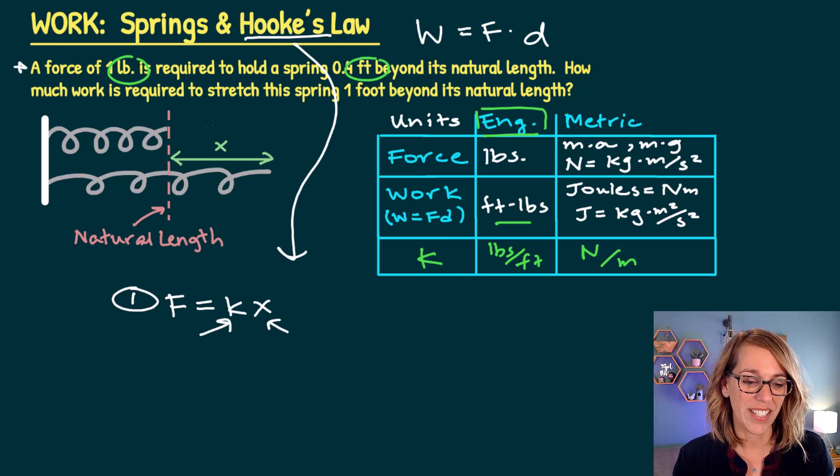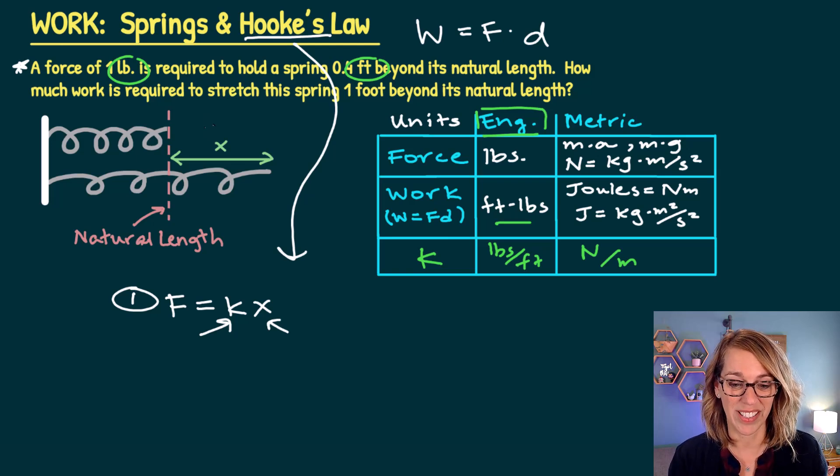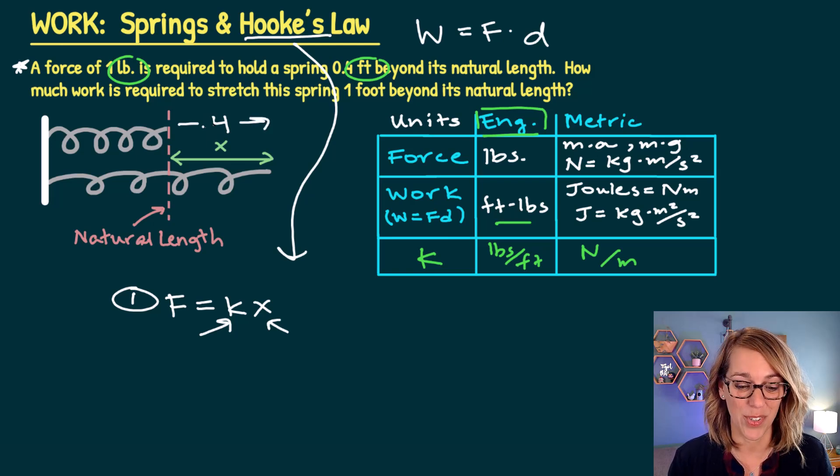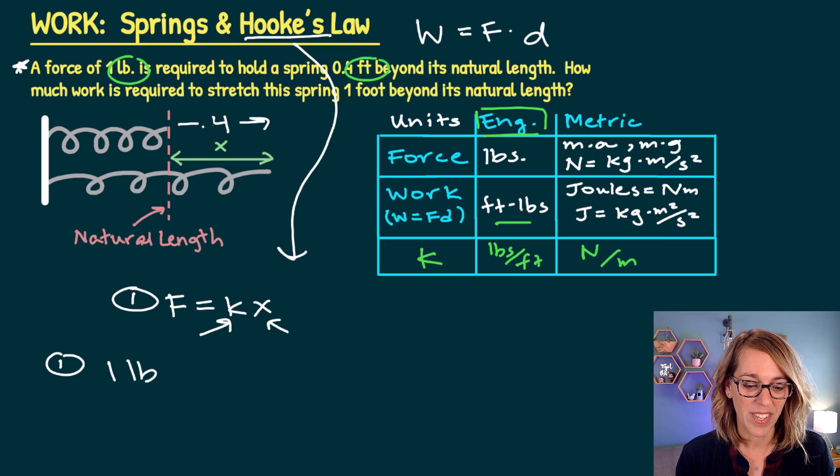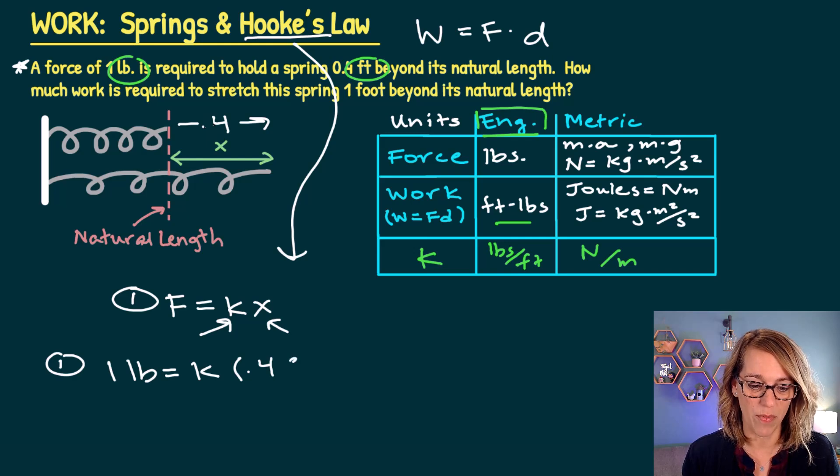I'm going to use this first statement to figure that out. It says a force of one pound is required to hold a spring 0.4 feet beyond its natural length. That 0.4 is the amount stretched. So I can go ahead and say that 0.4 in this case is equal to x. As I put this together then, I've got a force of one pound is equal to, I'm looking for k times that distance stretched, which is 0.4 feet.